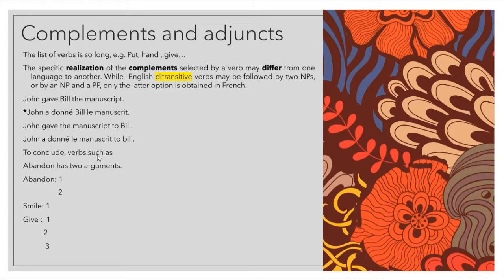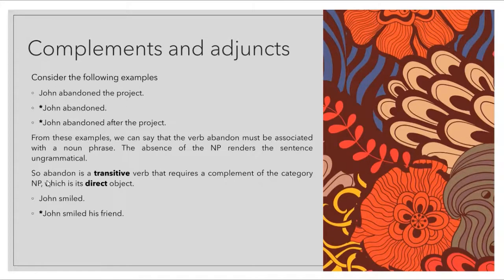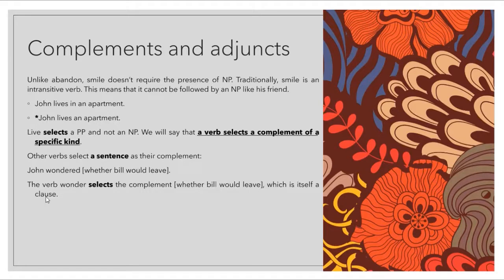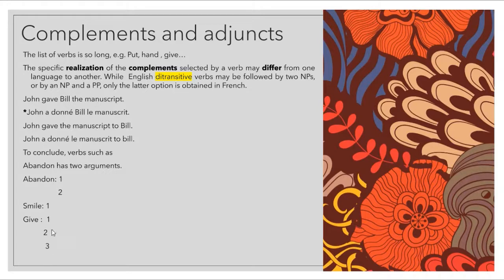To conclude: verbs such as 'abandon' have two arguments — John and the project. 'Smile' requires just one argument, which is John. 'Live' requires two arguments: the NP and the PP. 'Give' requires three arguments: John, Bill, and the manuscript.